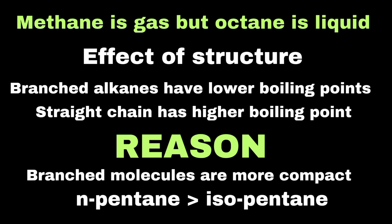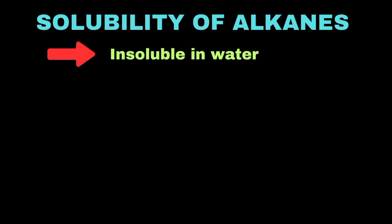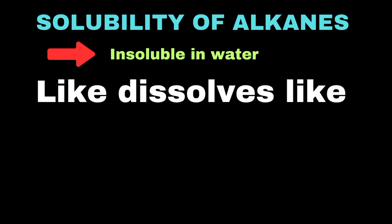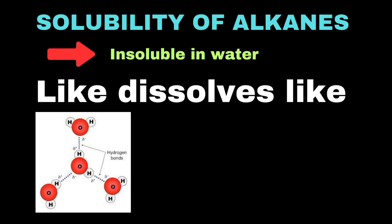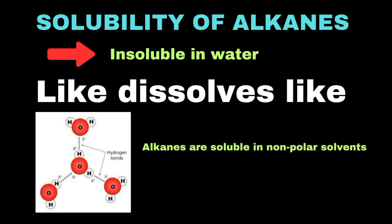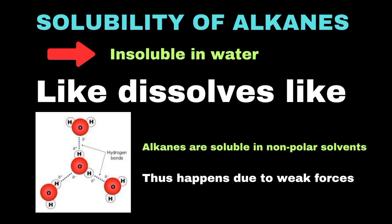Alkanes are insoluble in water because they are non-polar while water is a polar solvent. The principle 'like dissolves like' explains why non-polar substances do not mix with polar substances. Water molecules attract each other strongly through hydrogen bonding, and since alkanes cannot form these bonds, they do not dissolve in water. However, alkanes are soluble in non-polar solvents like benzene, ether, and chloroform.